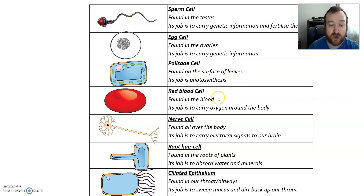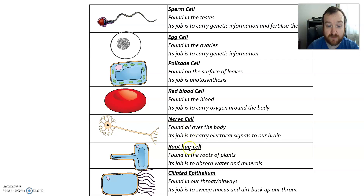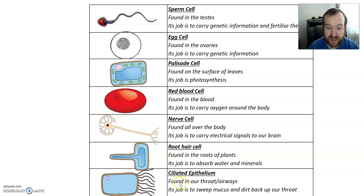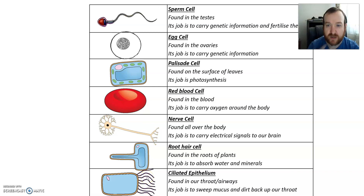We've got a nerve cell found all over the body — it carries electrical signals to and from our brain to different parts of the body. We've got a root hair cell, found in the roots of plants — its job is to absorb water and minerals, and it has a large surface area to help with that. And we've got a ciliated epithelium cell found in our throat and airways — its job is to sweep away mucus, with little hair-like structures that sweep upwards.